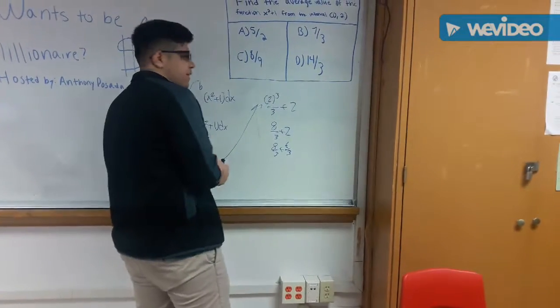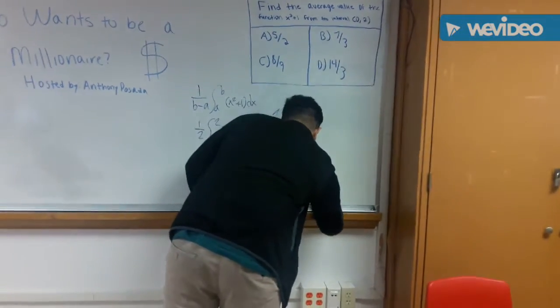And then after that, I would just multiply by the 1 half. Yeah, and then multiply by the 1 half at the very end. Don't forget, that's an important step.